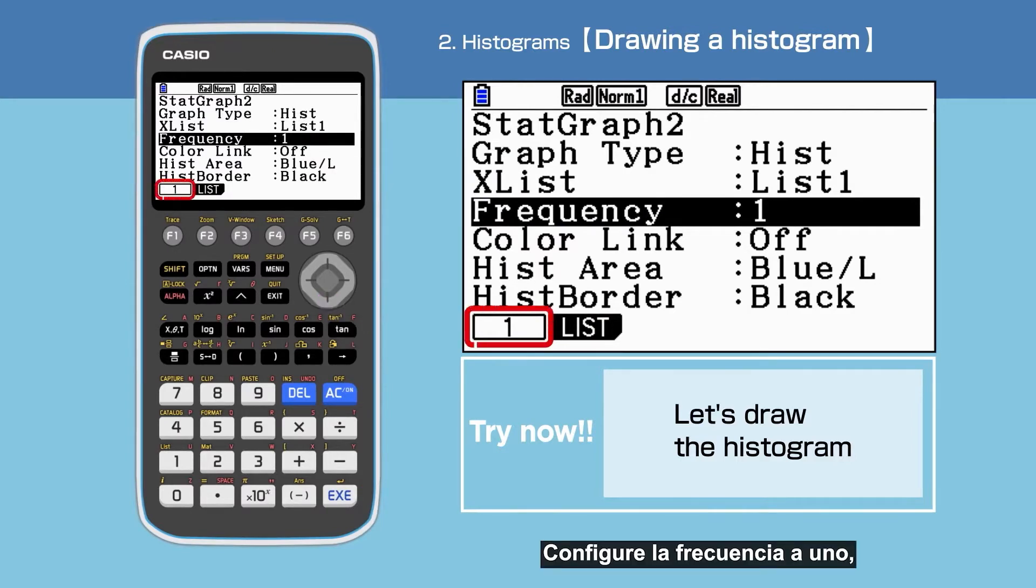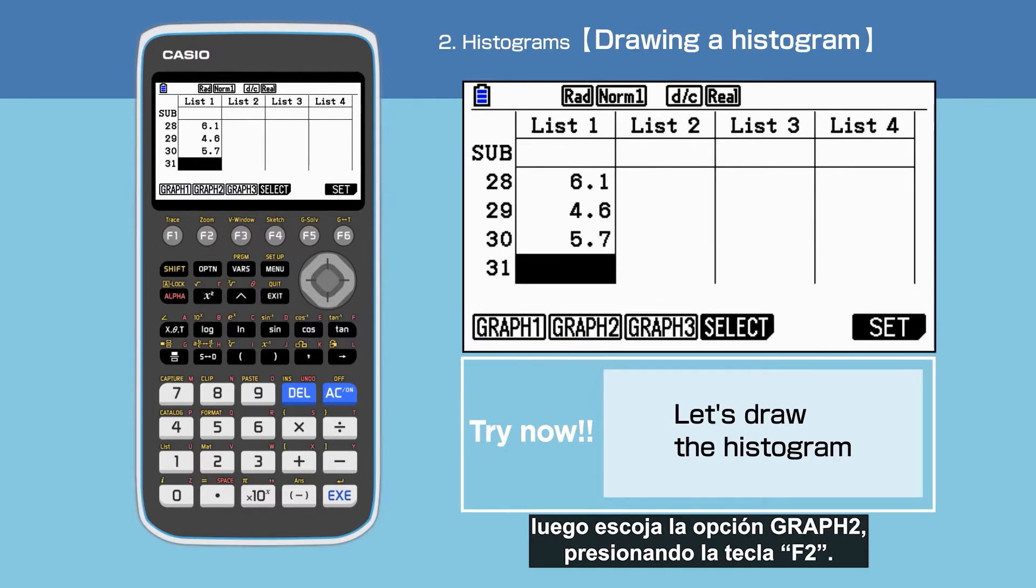Set Frequency to 1. Press Exit to end setting up, then choose Graphic by pressing F2.